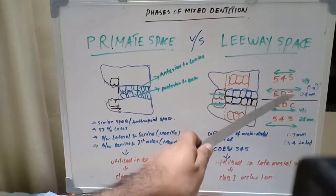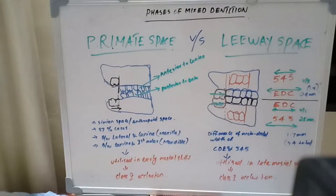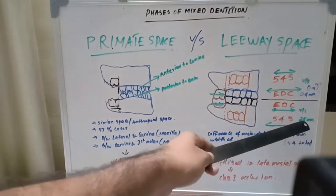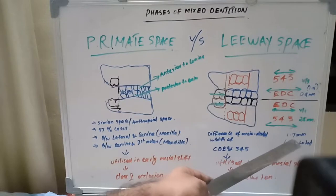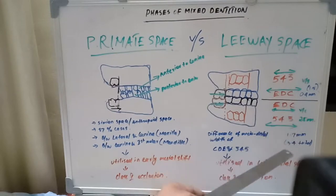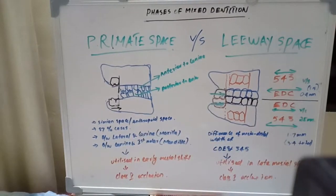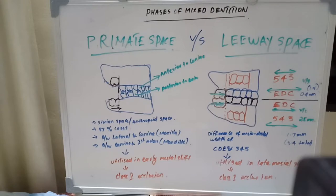In terms of measurements, the maxillary leeway space is 0.9 mm per side, giving a total of 1.8 mm. In the mandible, it is 1.7 mm per side, giving a total of 3.4 mm. So the upper arch has 1.8 mm and the lower arch has 3.4 mm of leeway space, which is utilized by the permanent molars if primate space is absent, to reach their final position.